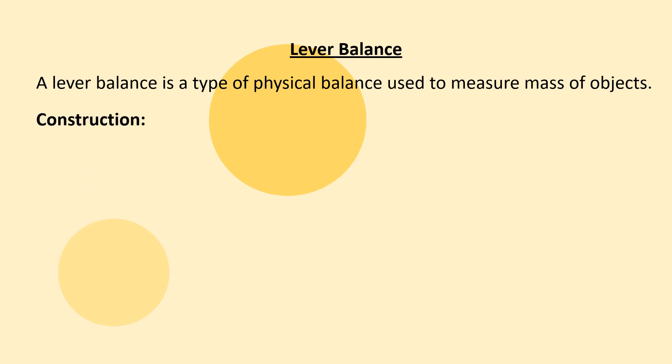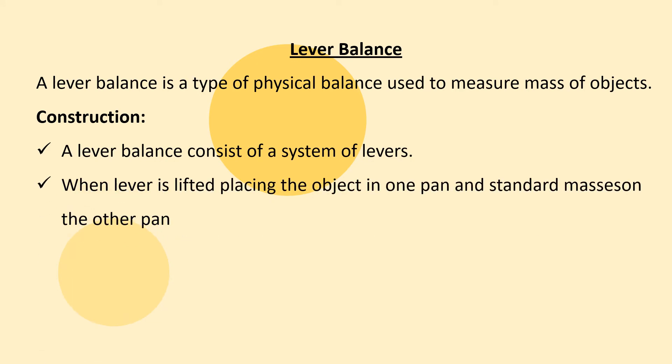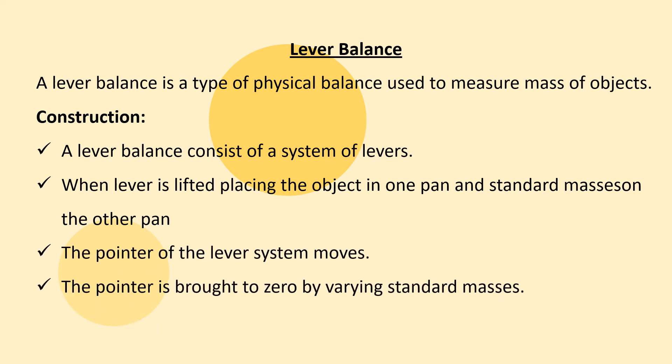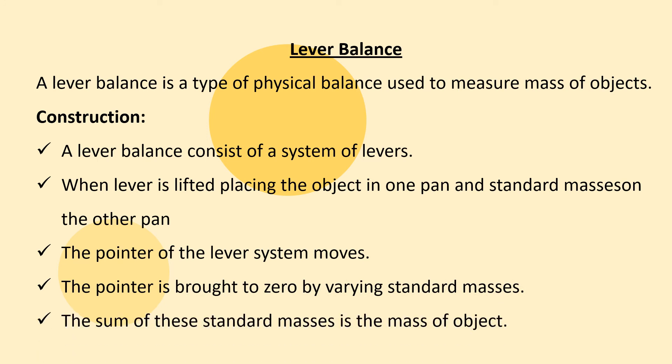Next we have the lever balance. The lever balance is also a physical measurement type used to measure the mass of an object by comparison. It consists of a system of levers. When an object is placed in one pan and standard masses on the other pan, the pointer of the lever system moves. The pointer is brought to zero by varying the standard masses, and the sum of these standard masses is the mass of the object.